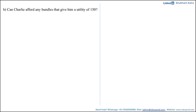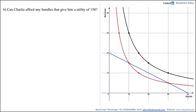In this video we would be solving the question: can Charlie afford any bundles that give him the utility of 150? In the previous video we drew a figure where on the x-axis you have apples, y-axis you have bananas. The blue line represented the budget line, and the red indifference curve was the equation of the indifference curve that gave Charlie the utility of 150.